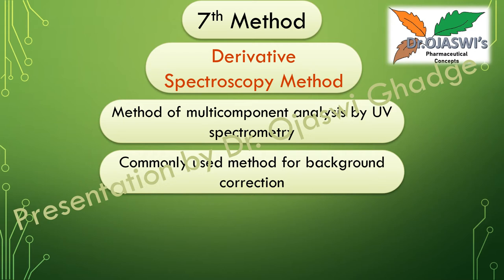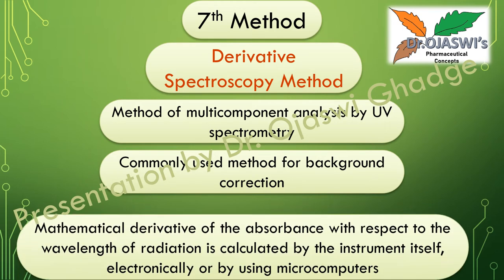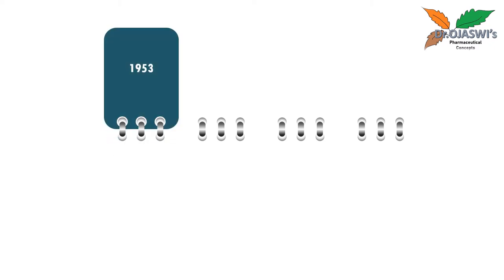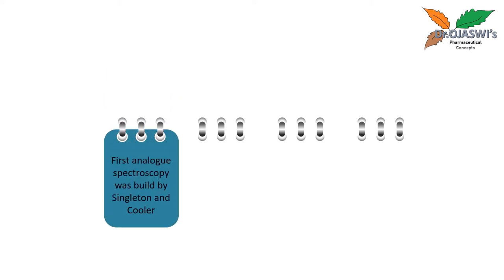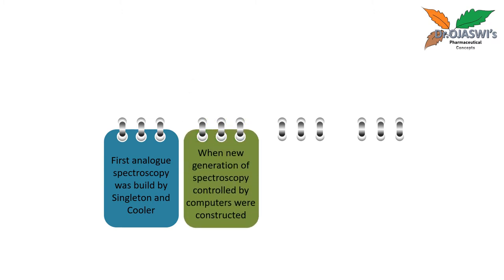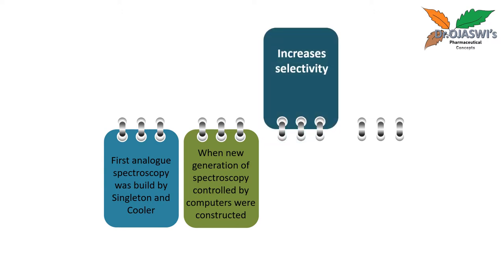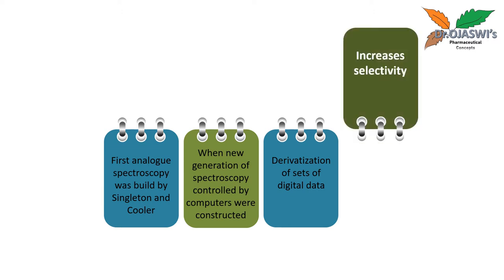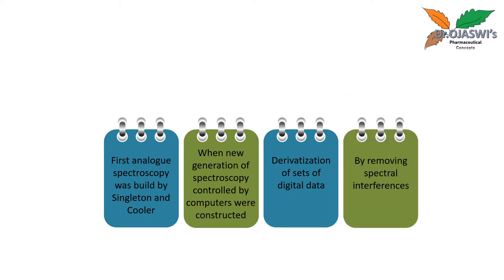One very popular advantage of derivative spectroscopy is background correction. The mathematical derivative of absorbance with respect to wavelength is calculated by the instrument electronically or using microcomputers. The method was first developed in 1953; the first analog spectroscope was built by Singleton and Cooler. It then developed rapidly when new generations of spectroscopes controlled by computers were constructed. Derivative spectroscopy increases selectivity by derivatizing digital data and removing spectral interferences.